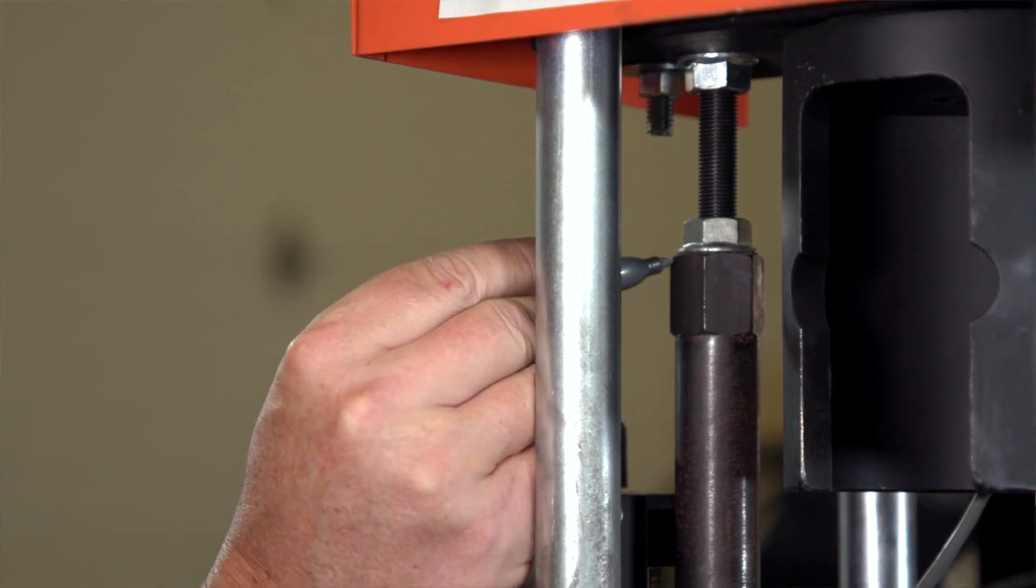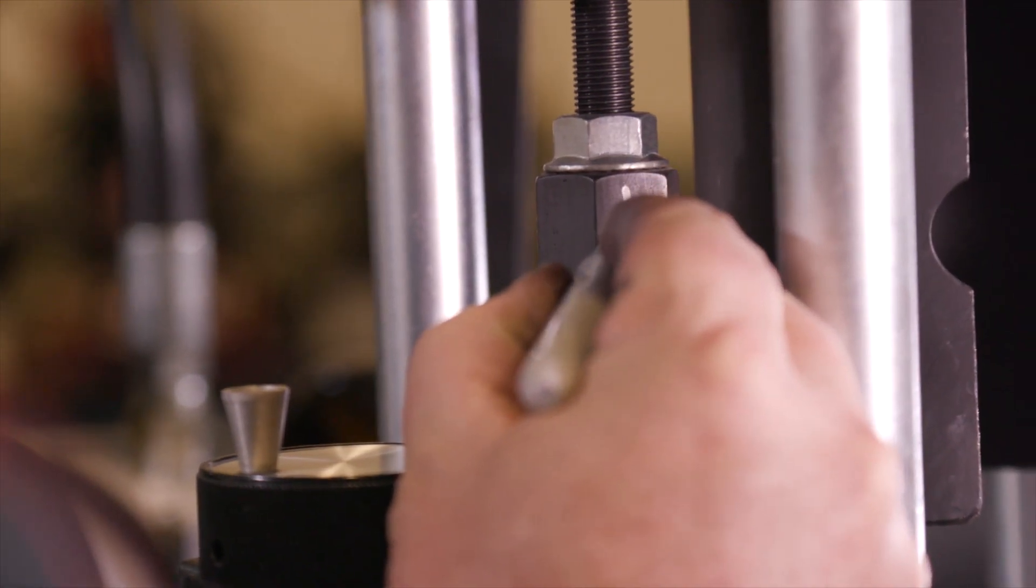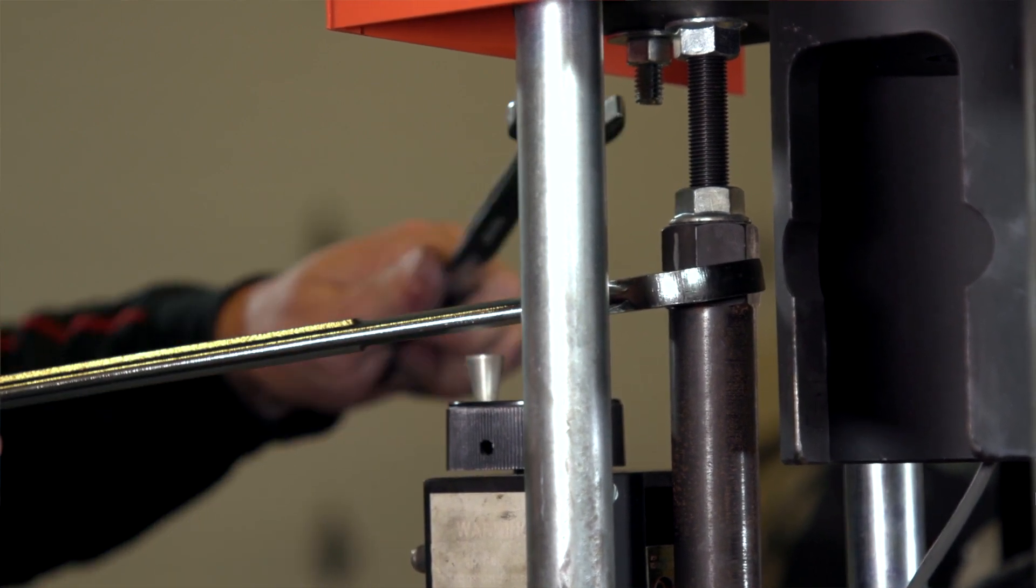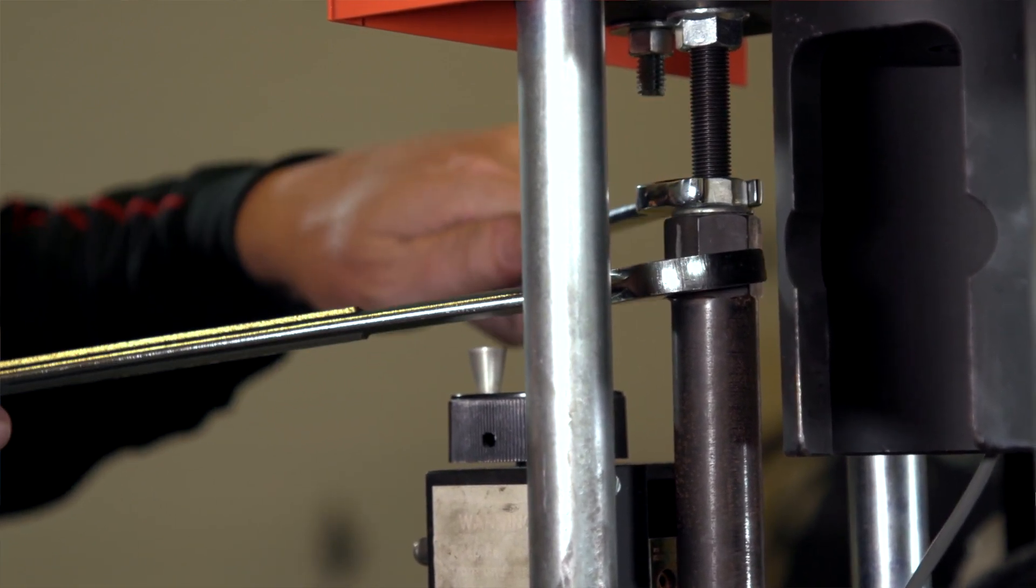If it helps, make a mark on the actuator rod to keep track of any rotations you make. Hold the 1 1/16 inch actuator rod in place while loosening the 3 1/4 inch lock nut.